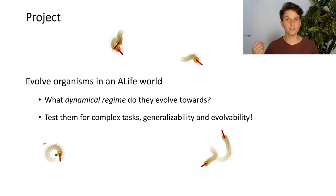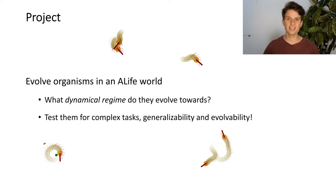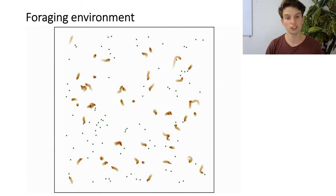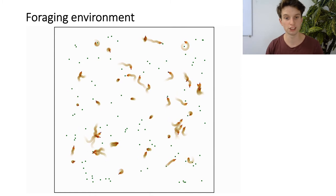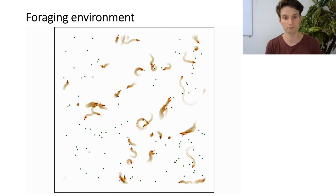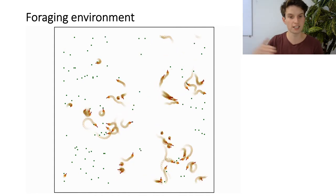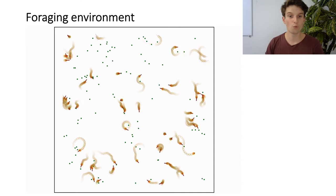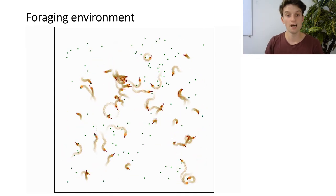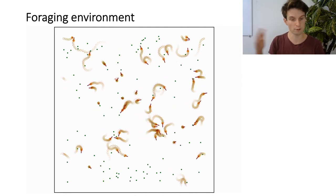For our project, we set up a model where neural network-controlled organisms are subject to evolution. They live in an artificial lifestyle environment where they have to solve a foraging task. We are interested in what dynamical regime the controllers of the organisms would evolve towards, and we also tested the organisms for the previously mentioned properties. We evolved a population of organisms with an evolutionary algorithm with discrete generations. Each generation, the whole population gets evaluated in the 2D environment. The orange organisms eat green food particles by running over them. We implemented an energy model where organisms gain energy by eating and spend energy by moving, and fitness is calculated as the average energy over their whole lifetime.